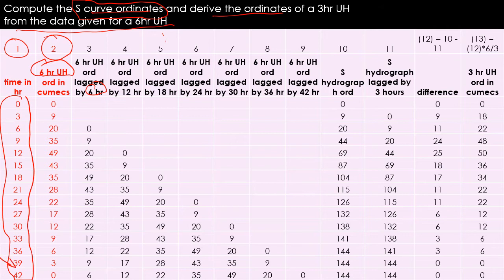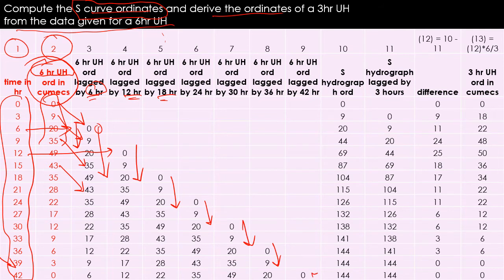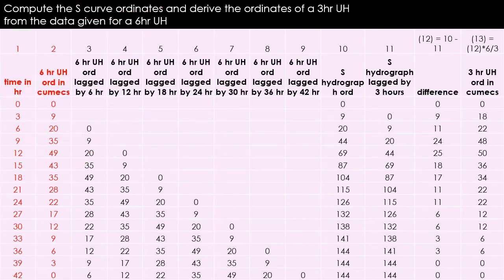We will lag the unit hydrograph first by 6 hours — that is, start writing the 6-hour unit hydrograph ordinates from row 6 downwards: 0, 9, 35, 43, and so on. Then lag by 12 hours, starting at row 12 and writing the 6-hour ordinates downwards from there. Then for 18 hours, write the data starting from row 18, then from 24, 30, 36, and 42. We stop lagging when the first value of the 6-hour ordinates reaches the last row, corresponding to time 42.